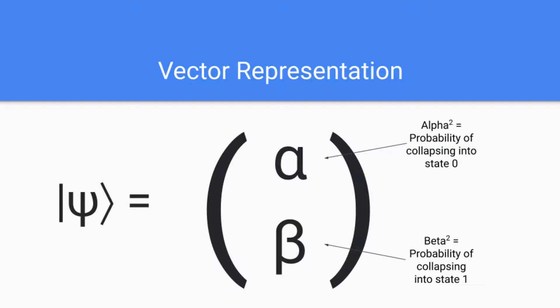Now let's talk about how we can represent qubits using vectors. In vector representation we still have the quantum state with alpha and beta, and alpha squared is the probability of collapsing into state zero when the qubit is measured and beta squared is the probability of collapsing into state one when measured.